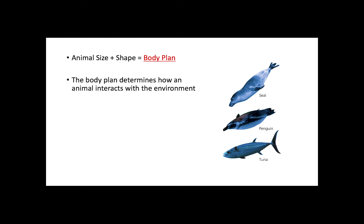An animal's body plan, which is composed of the animal's size and shape, determines how individuals interact with their environment. A body plan is not something animals determine consciously. Instead, this is a result of specific patterns of development controlled by the genome and a result of evolution.